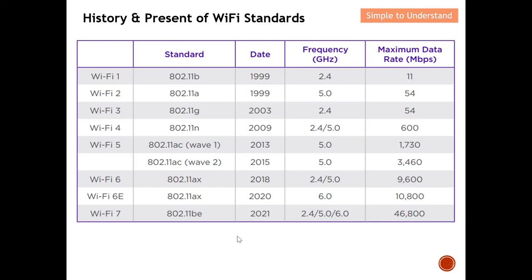Looking at this column here — this column represents throughput or maximum data rate. As I mentioned earlier, for Wi-Fi 1 all the way to Wi-Fi 5, the emphasis was on how to increase the throughput or data rate. Maybe except from generation 2 to 3, there is no particular emphasis on increasing the data rate from one generation to the next.